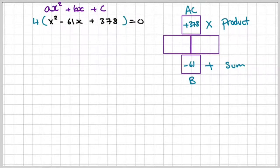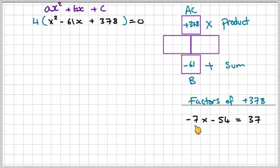In which case, 1 times 378 is plus 378, and my coefficient of X is minus 61. So essentially, I need two factors of 378 that add to give us negative 61 and multiply to give us 378. It's negative 7 times negative 54, which gives us 378, and then negative 7 plus negative 54, which gives us negative 61. So my two factors are negative 7 and negative 54.